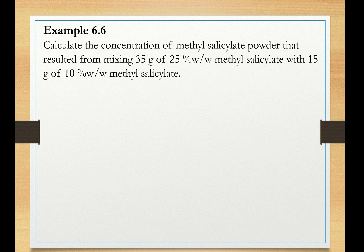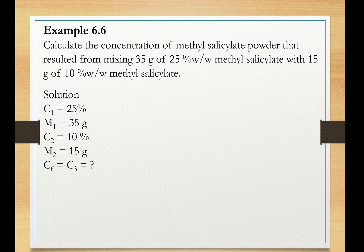Let us take a look at our first practice example here, Example 6.6. Calculate the concentration of methyl salicylate powder that resulted from mixing 35 grams of 25% methyl salicylate with 15 grams of 10% w/w methyl salicylate. So first, we just write down our concentrations and masses of powders here. We have C1 as 25%, the mass 1 is 35 grams, and we mix it with a concentration of 10% w/w and a mass of 15 grams.